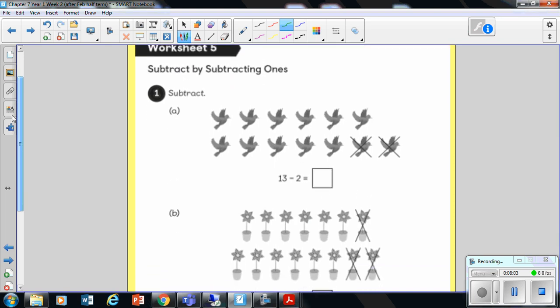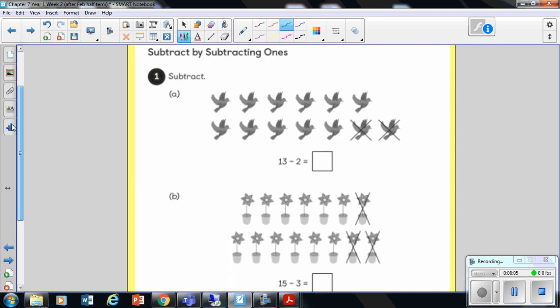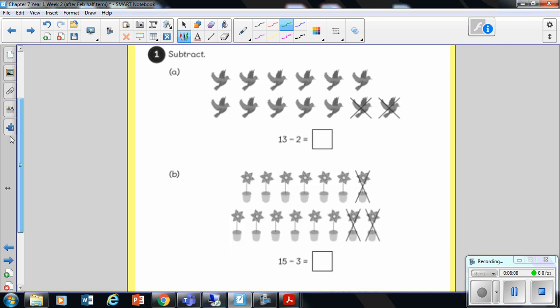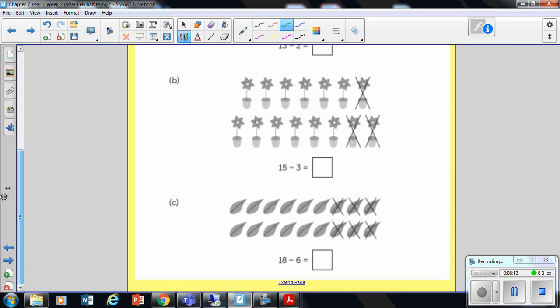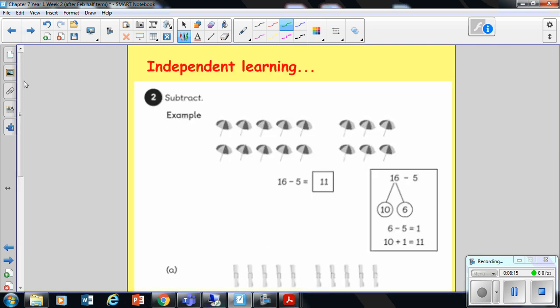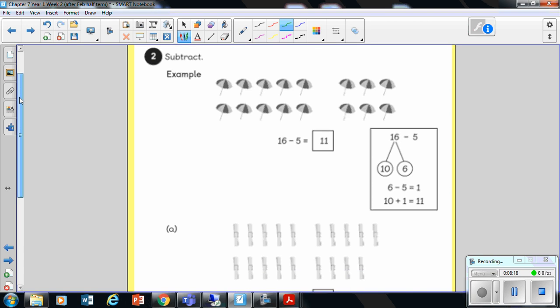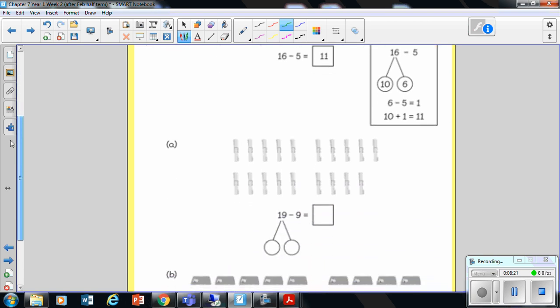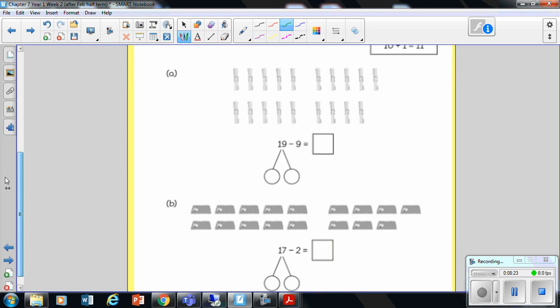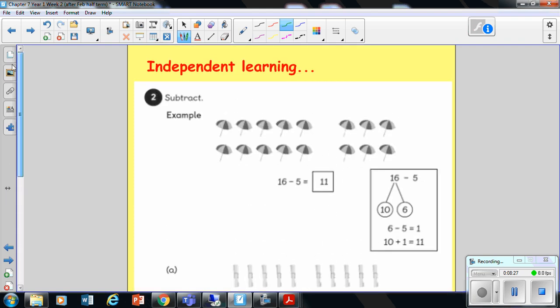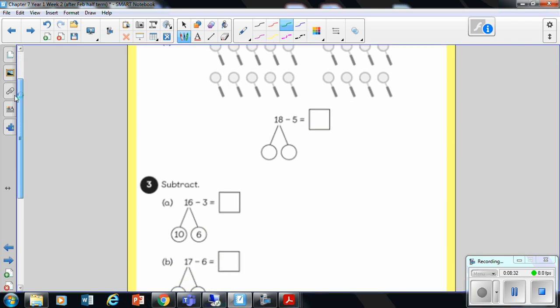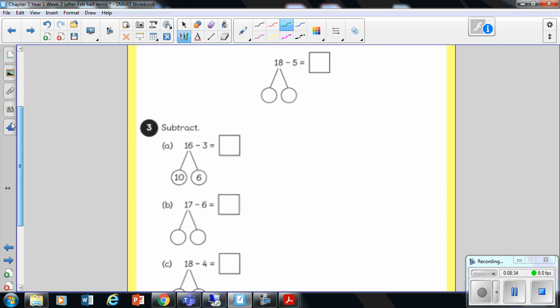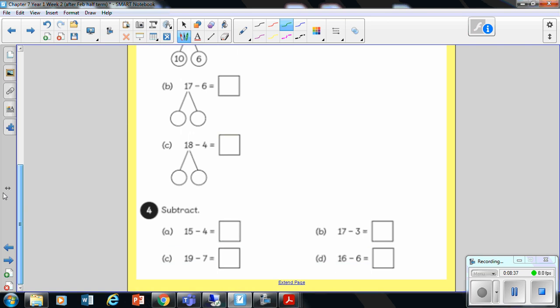Now, in today's worksheet, you've got a sheet here, subtracting by subtracting ones. So 13 take away 2. So have a go at doing that. And then you've got another sheet where you are partitioning your bigger number. And you're using the ones to help you, just like we did in our guided practice. There's another final sheet there. Remember to use your tens frames to help you partition and then take away the ones.